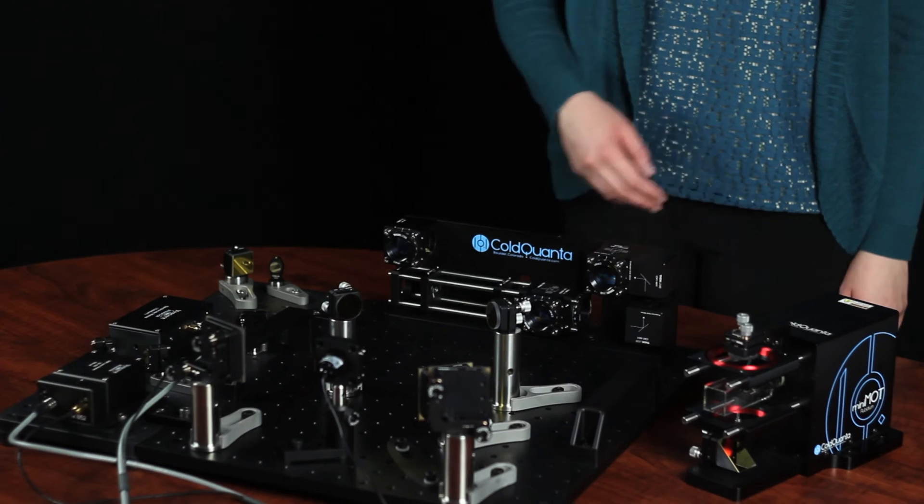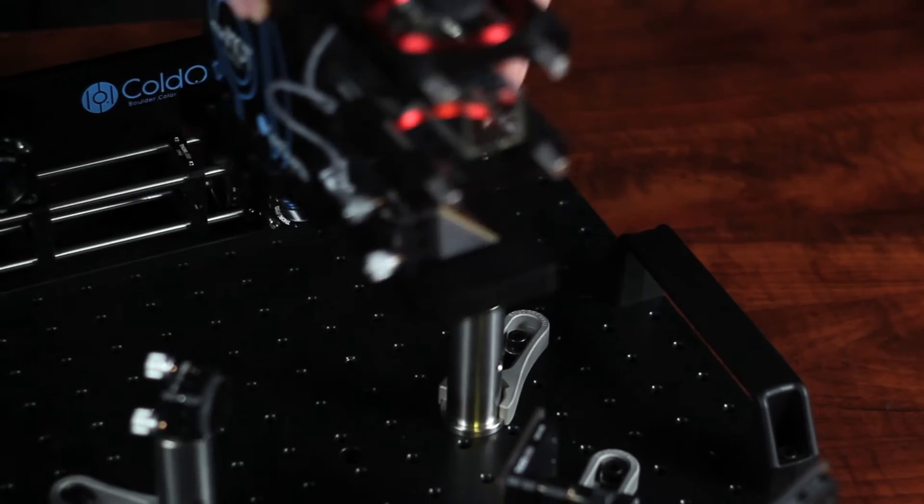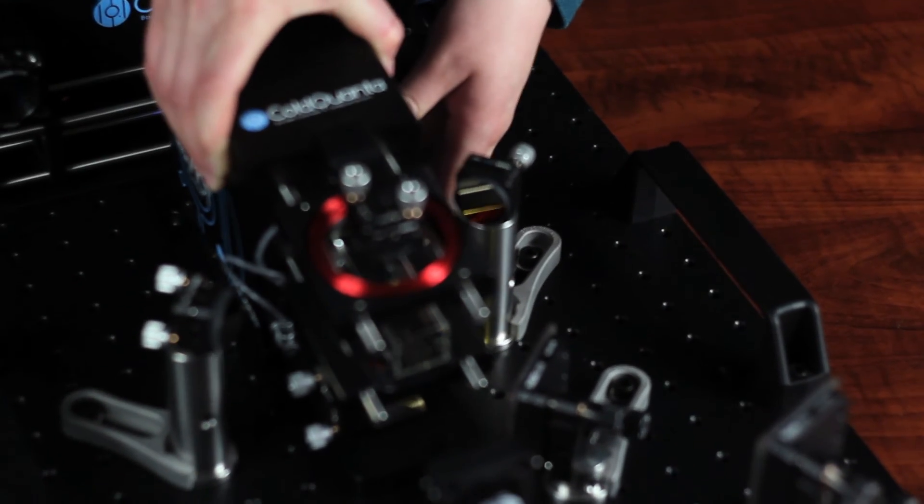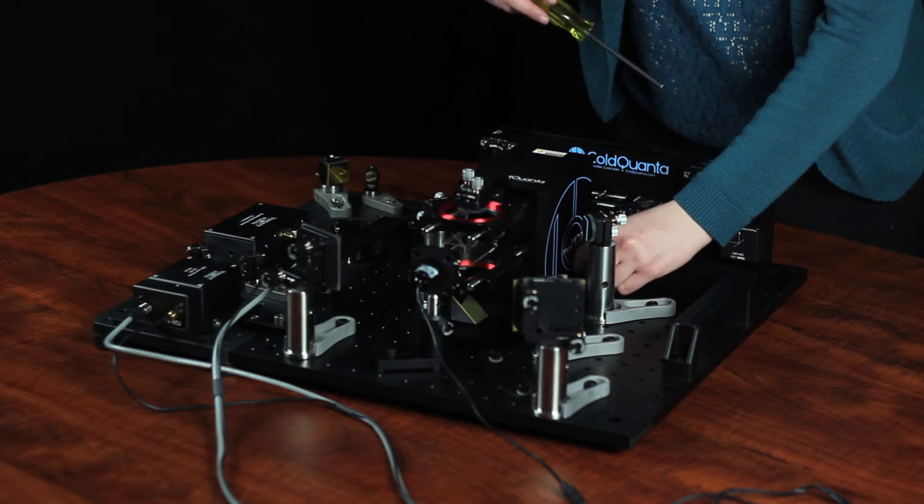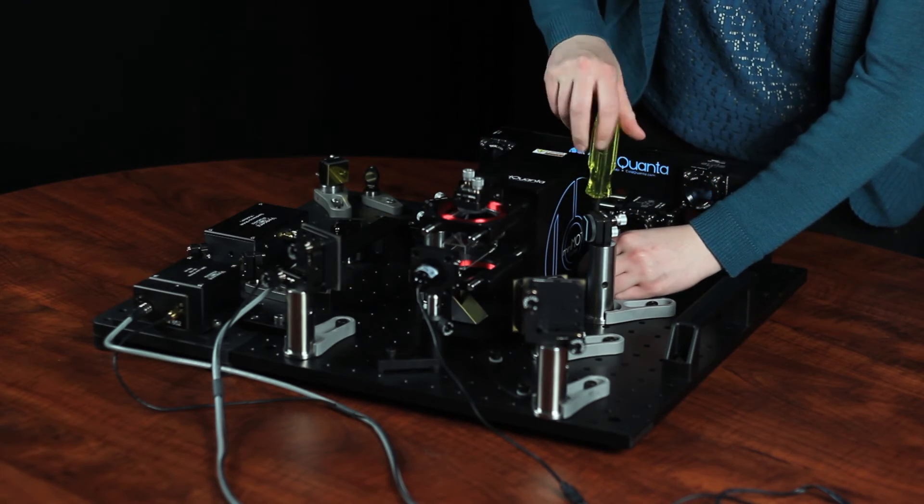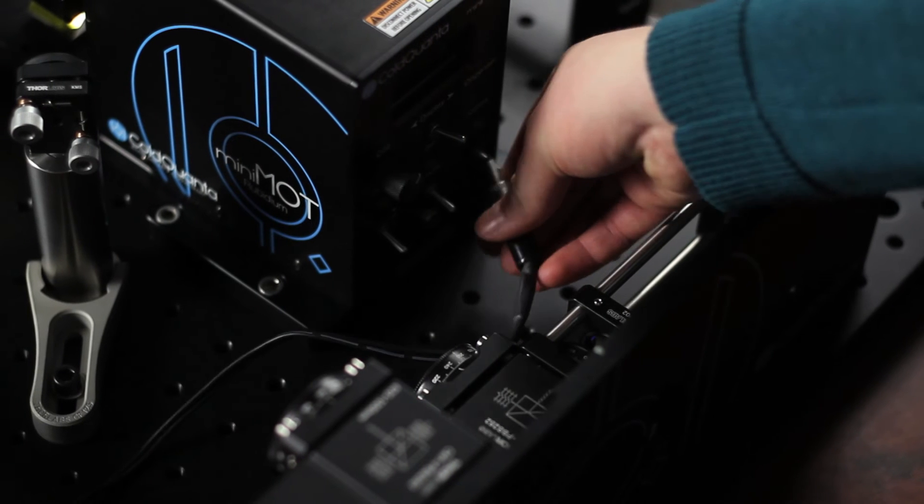Now let us install the Mini MOT. Hold the Mini MOT steadily and slowly lower it into place. Gently sit the Mini MOT on the breadboard and secure it. Once secure, connect the cable to the rear panel of the Mini MOT.